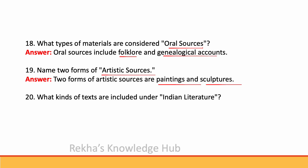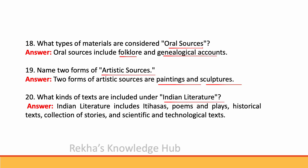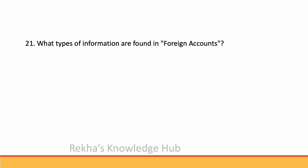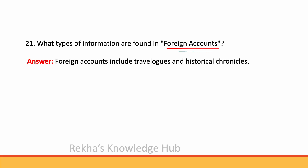What kinds of texts are included under Indian literature? Indian literature includes itihasas, poems and plays, historical texts, collections of stories, and scientific and technological texts. Foreign accounts include travelogues and historical chronicles.